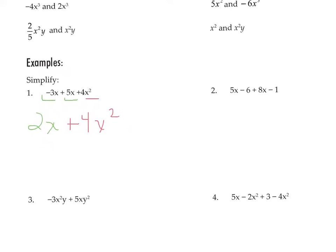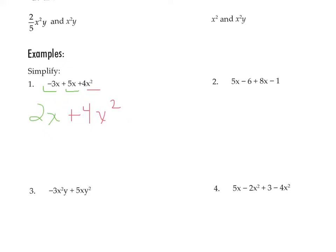On number 2, we first identify the like terms. 5x and 8x are like terms because they both have x. Negative 6 and negative 1 are also like terms — they don't have any variables. When we add 5x plus 8x, we add the coefficients and that makes 13x. When we add negative 6 and negative 1, we get negative 7. So that's simplified now.